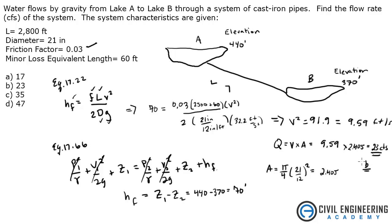That was a good question about using two different equations to solve for the flow rate of this system. Head on over to civilengineeringacademy.com for more tips and tricks on solving the PE exam.